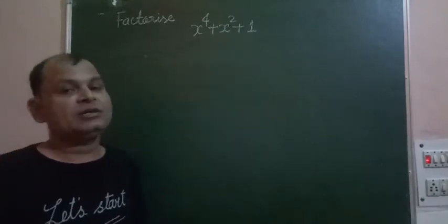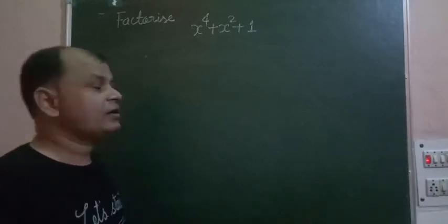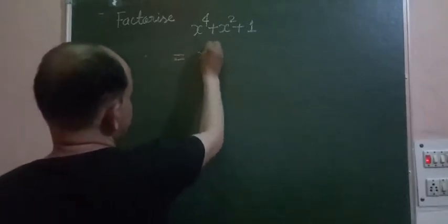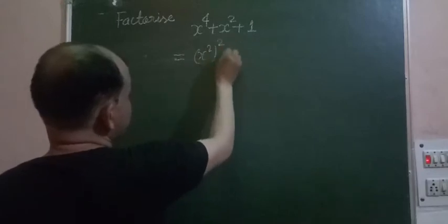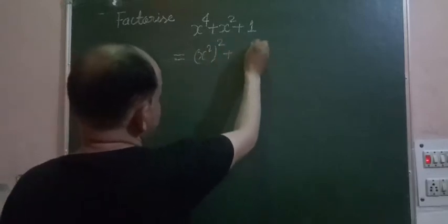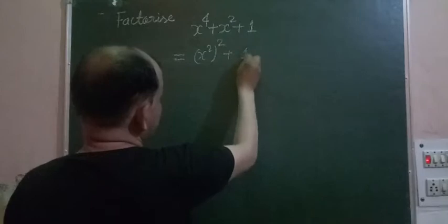We make a complete square. First we take this - this is the whole square of x squared, and this is x squared, and we take 1, so 1 whole square.